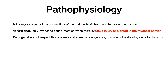Think about this: if Actinomyces inhabits the oral cavity, the GI tract, and the female urogenital tract, then a tissue injury or some type of risk factor to one of those mucosal barriers causes a localized infection in that area. Beyond that localized infection, this pathogen does not respect tissue planes and spreads contiguously. This is why Actinomyces is associated with draining sinus tracts.